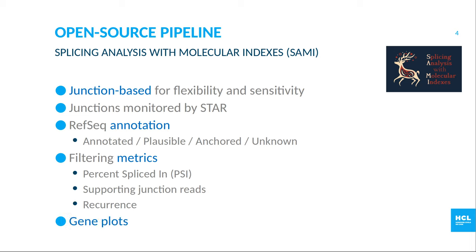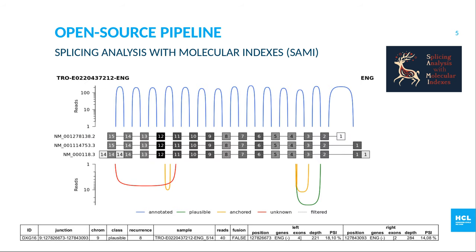With SAMI we produce gene plots like this one. For one sample in the ENG gene, you can see the three transcripts present in the annotations, with exons numbered from right to left because it is transcribed on the reverse strand. Below are the annotated junctions and the read counts observed, and at the bottom is everything aberrant detected — especially a plausible junction which is actually a skip of exon 3, supported by 40 reads.